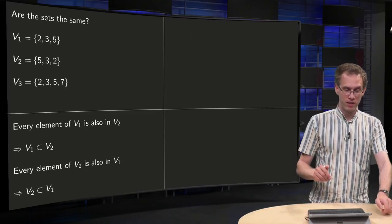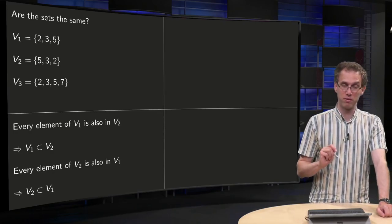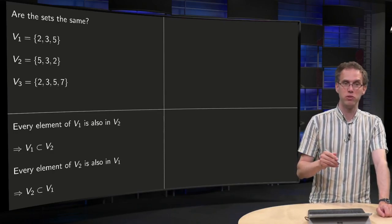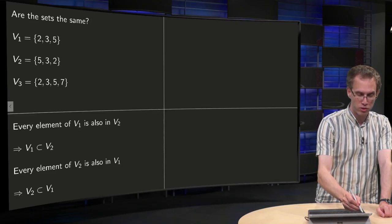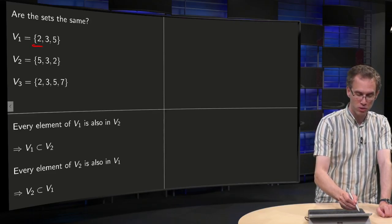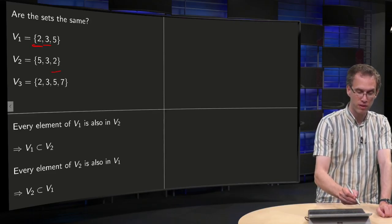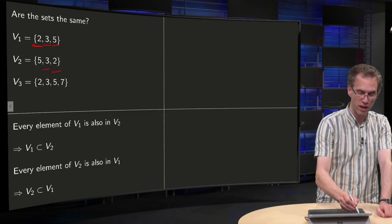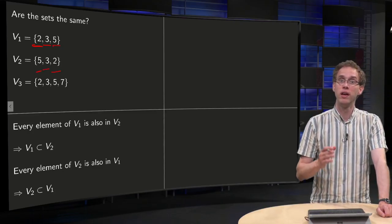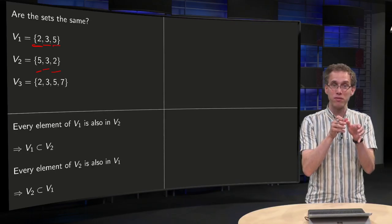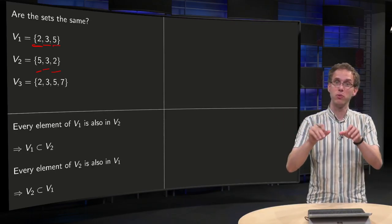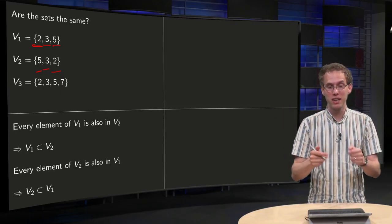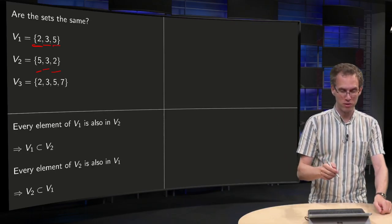Now what we do, we check that every element of V1 is also in V2. So we have in V1: 2, which is also in V2; we have 3, which is also in V2; and we have 5, which is also in V2. So every element of V1 is also in V2, which means that V1 is contained in V2, V1 is a subset of V2.